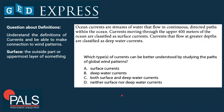Next question. This question is about definitions and understanding currents, and being able to make connections between the information given about currents and wind patterns. Ocean currents are streams of water that flow in continuous directed paths within the ocean. Currents moving through the upper 400 meters are classified as surface currents; currents at greater depths are classified as deep water currents. Which type of current can be better understood by studying global wind patterns? A) Surface currents, B) Deep water currents, C) Both, D) Neither.